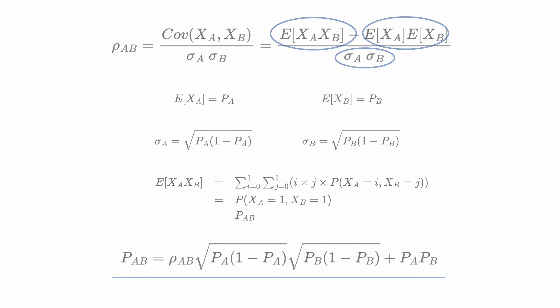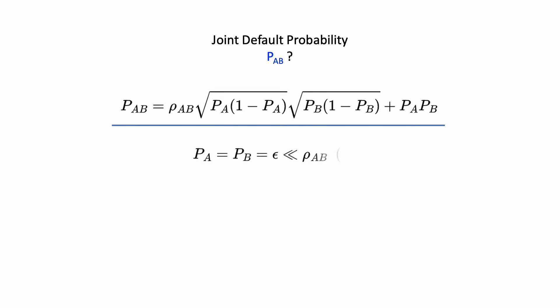It's always helpful to consider extreme or special cases. If the two events are completely independent of each other, the joint default probability is just the product of pA and pB. On the other hand, if the two default probabilities are close and very small compared to the correlation coefficient, we can use what we just got for a simpler approximation. Since epsilon is very small, this gives rho times epsilon. The correlation coefficient multiplies the individual default probability.